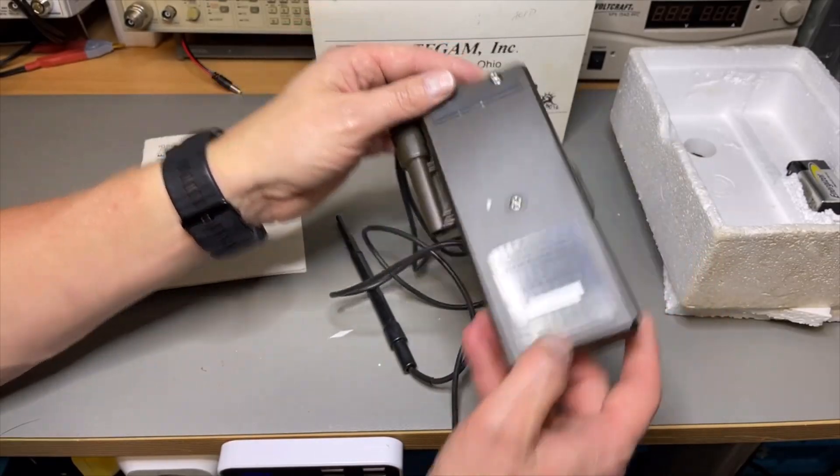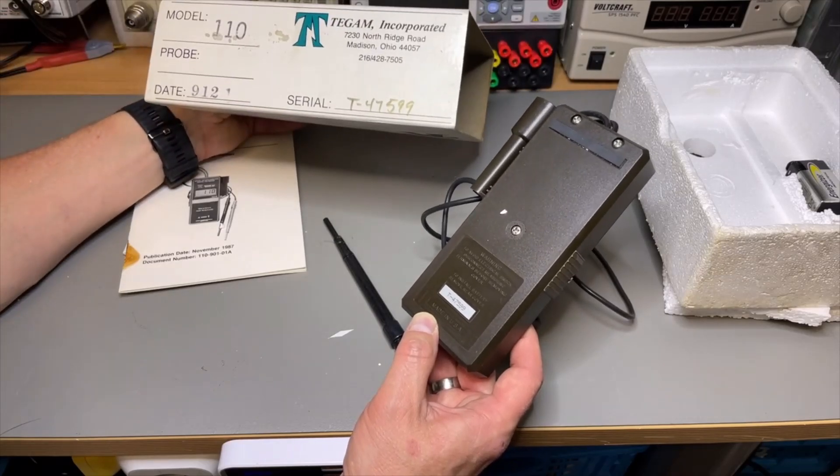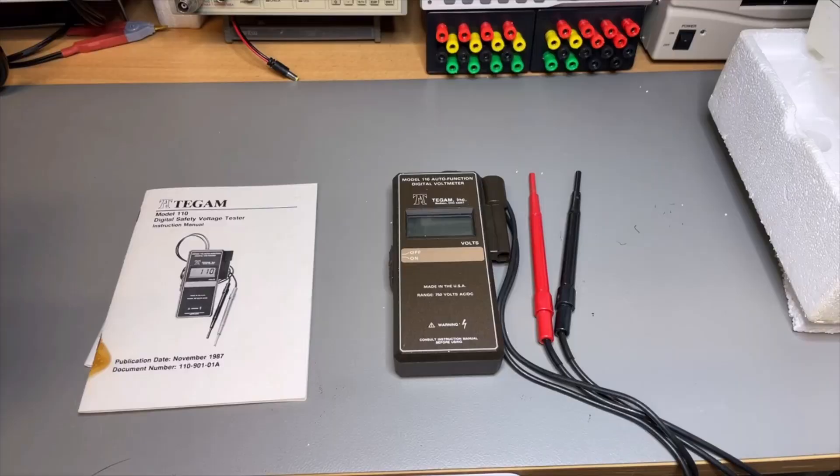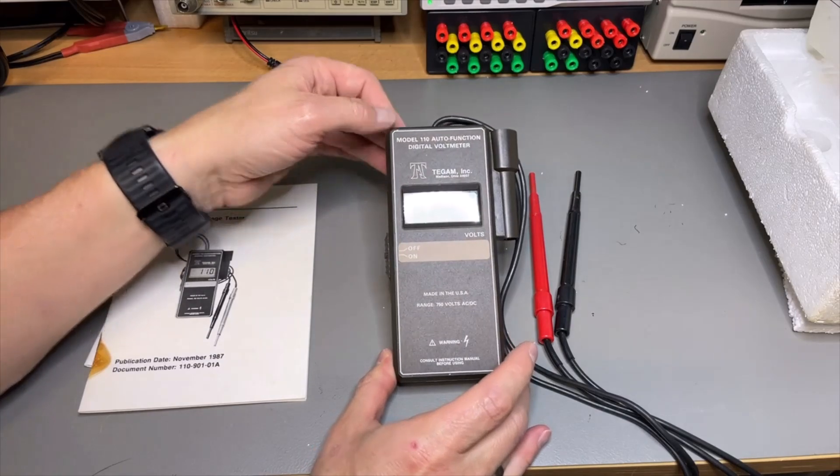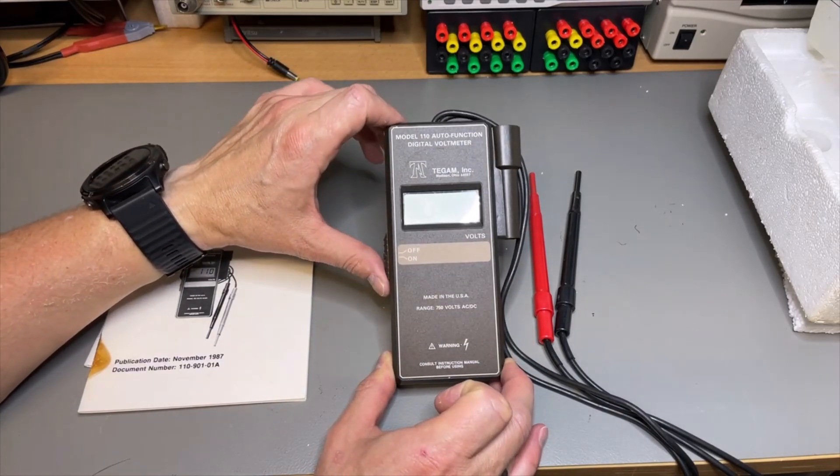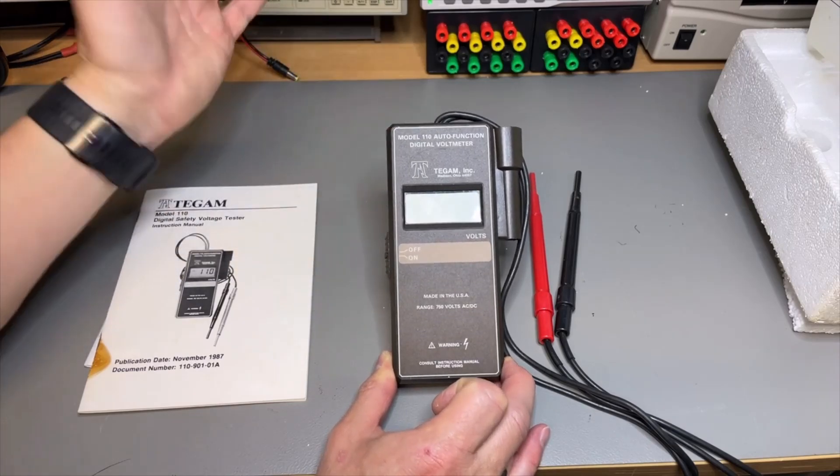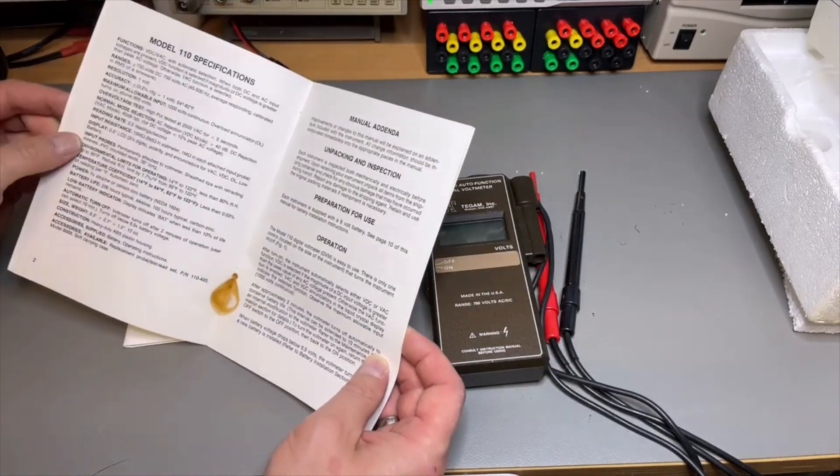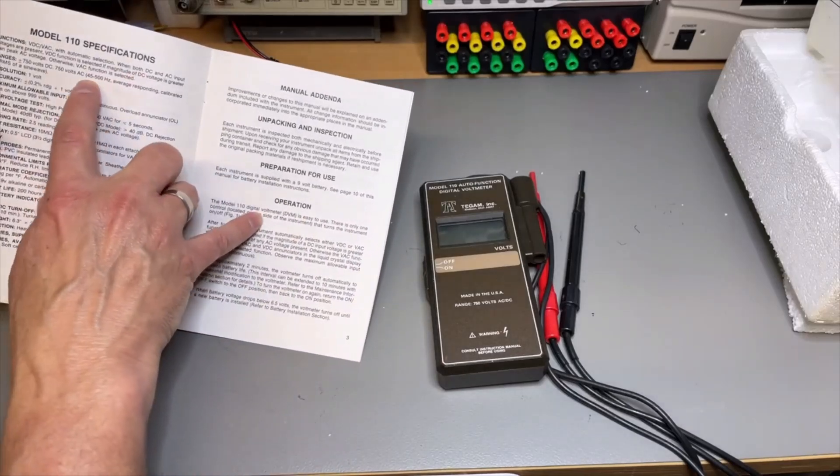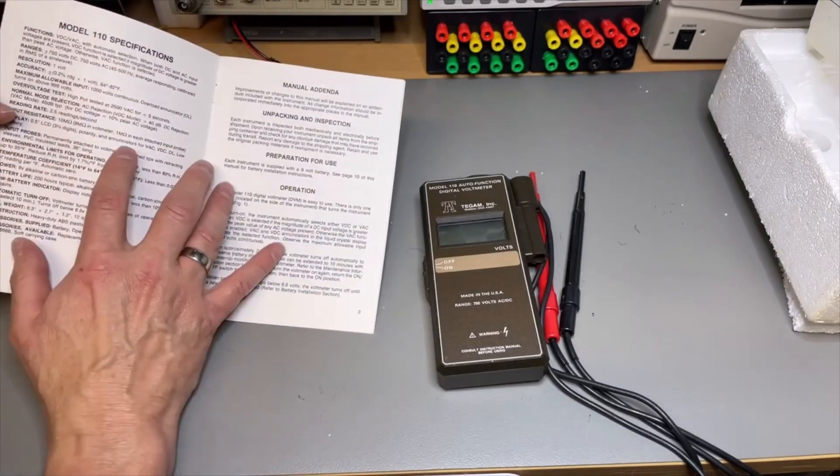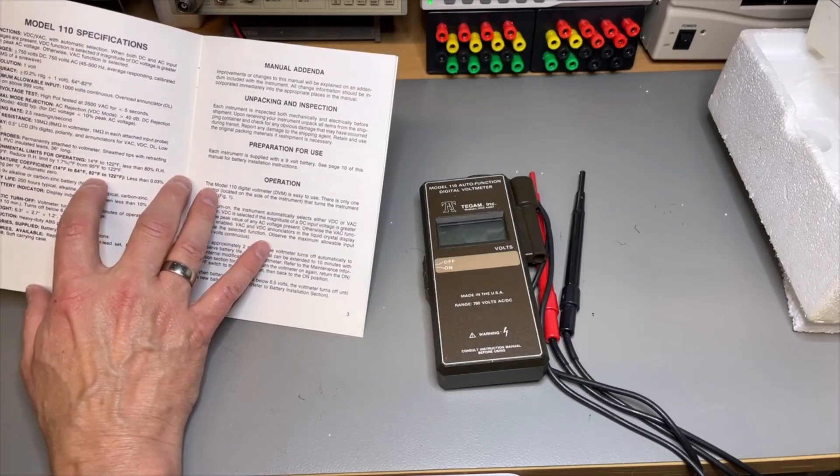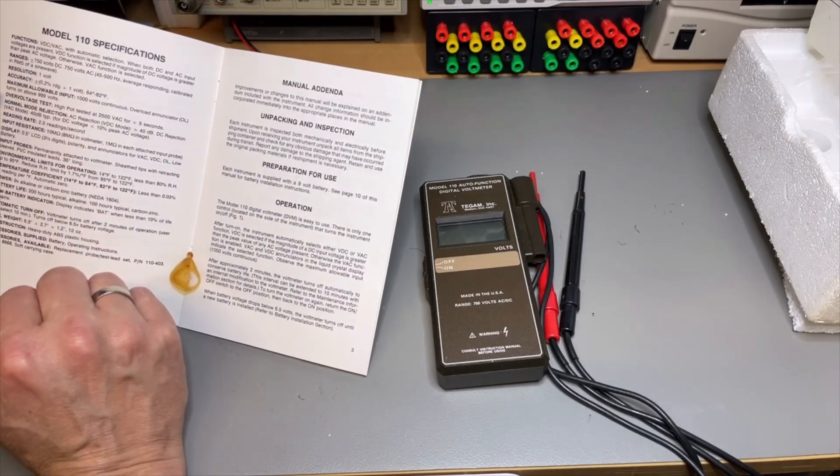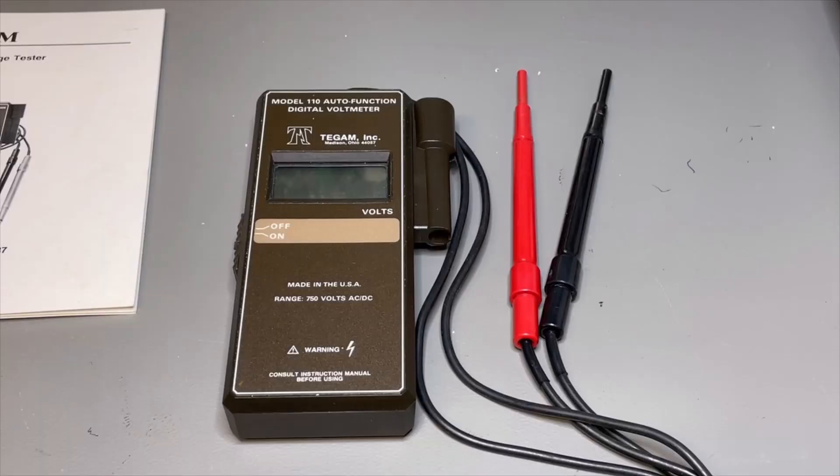It doesn't look to be very damaged. Does the serial number match? Yes it does. Okay, so hopefully it was a loose battery and it was not inside here. So it is an automatic function digital voltage meter. It only has an on-off button and that's all. And still it can do AC and DC.